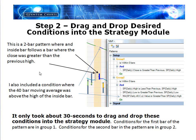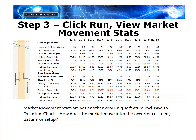Once I've created a pattern, I go to step 3, which is to click Run. Instantaneously, market movement statistics are provided with regard to that pattern. Market movement stats are exclusive to Quantum Charts — I wrote on market movement analysis back in 1995 in a newsletter, discussing the importance of knowing the market movement after a pattern as opposed to just throwing on an exit rule. I'm going to show you a couple of very powerful benefits associated with having these stats in front of you.